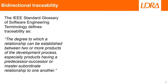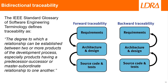There is little point in having requirements unless they are fully and completely implemented. That can be established by means of traceability. IEC's standard glossary of software engineering terminology defines traceability as the degree to which a relationship can be established between two or more products of the development process. Bidirectional traceability means that traceability paths are maintained both forwards and backwards.